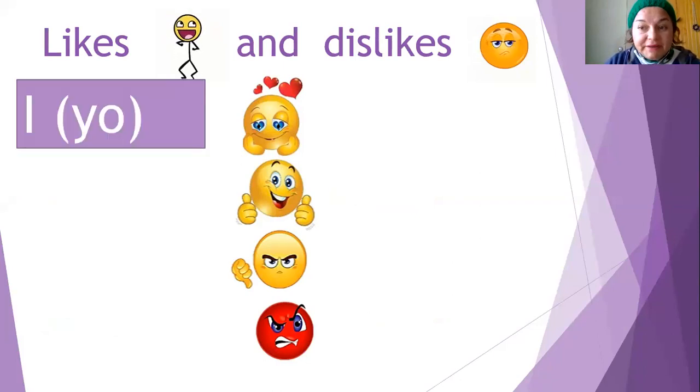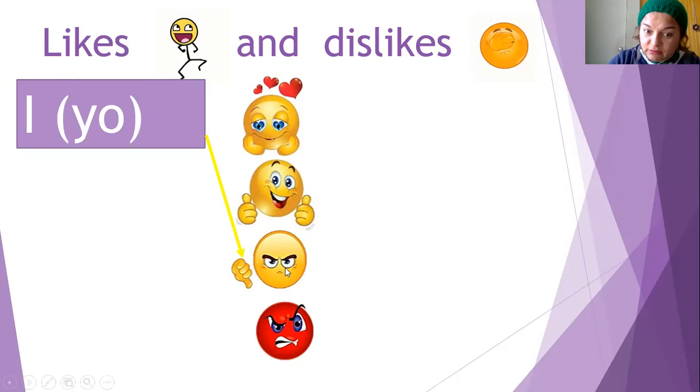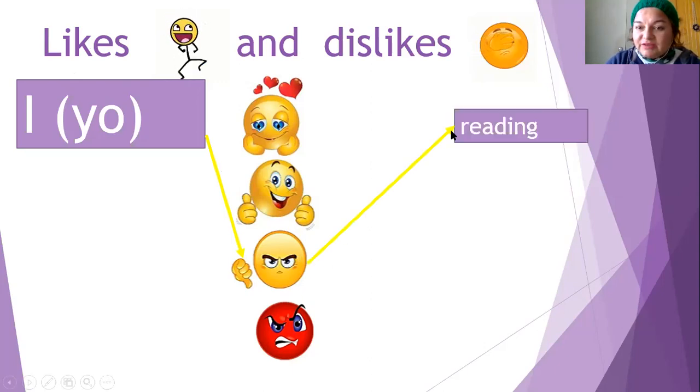For example, I meaning yo. I meaning yo, significa yo. Vamos a seguir la flechita. Y vamos a decir, I don't like. Porque si seguimos la flechita, y este significa don't like or doesn't like. Sería, I don't like. Y ahora vamos a seguir la flechita de nuevo. Y tenemos una acción. Reading.